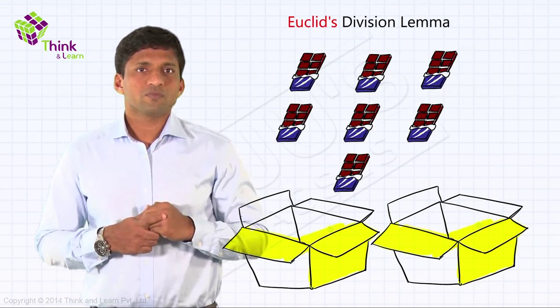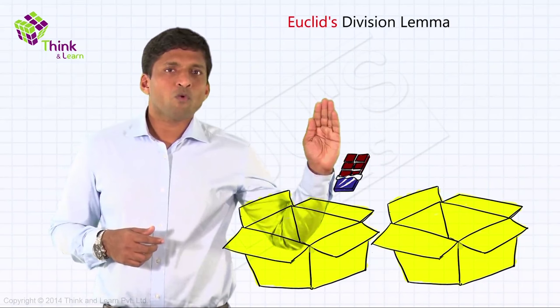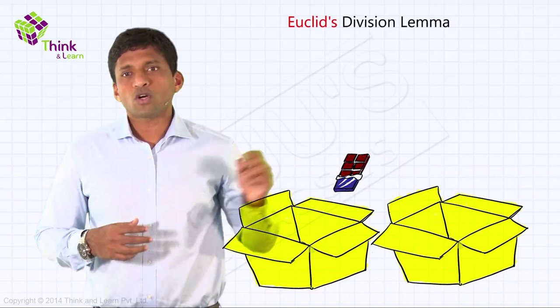So you will get three, three, and one chocolate will be left out. So there will be two boxes and one chocolate will be left out. Now how will you represent this particular scenario using division? Very simple, right?